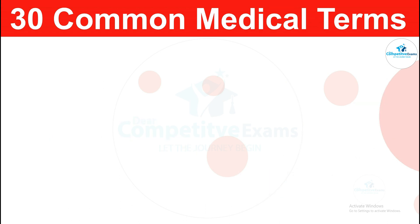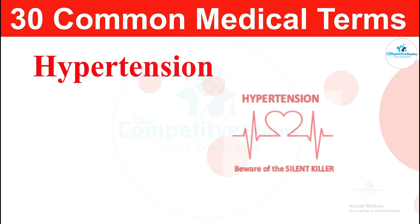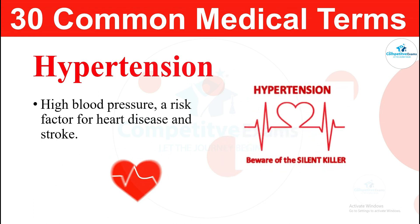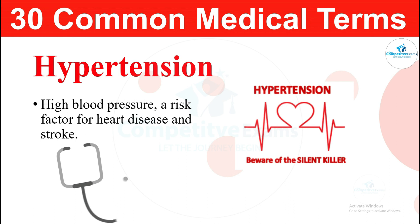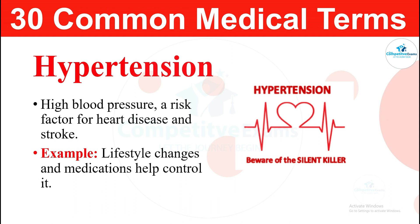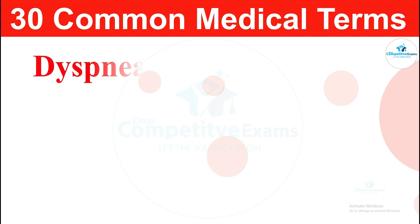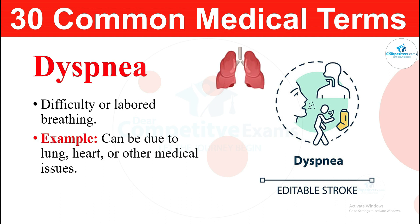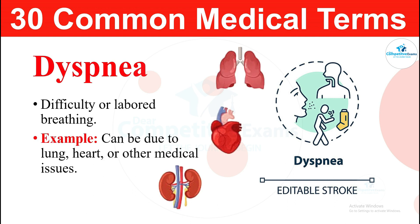The next medical term: hypertension. Hypertension is high blood pressure, a risk factor for heart disease and stroke. Lifestyle changes and medication can help control it. The next medical term: dyspnea. Dyspnea is difficulty or labored breathing. It can be due to lung, heart, or other medical issues.